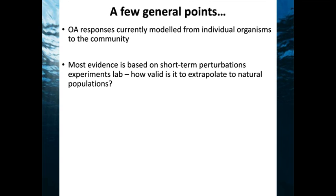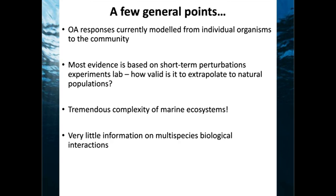An important point: when animals have been exposed to higher levels of CO₂ in the lab, those levels are generally much higher than what we predict will happen in the near future — so the results may answer a different question than a realistic change. There's also tremendous complexity in marine ecosystems with mutualism, commensalism, predation, competition, and parasitism — those five types of ecological interactions mean that if animals are interacting with each other, you need to factor that into how they'll respond.